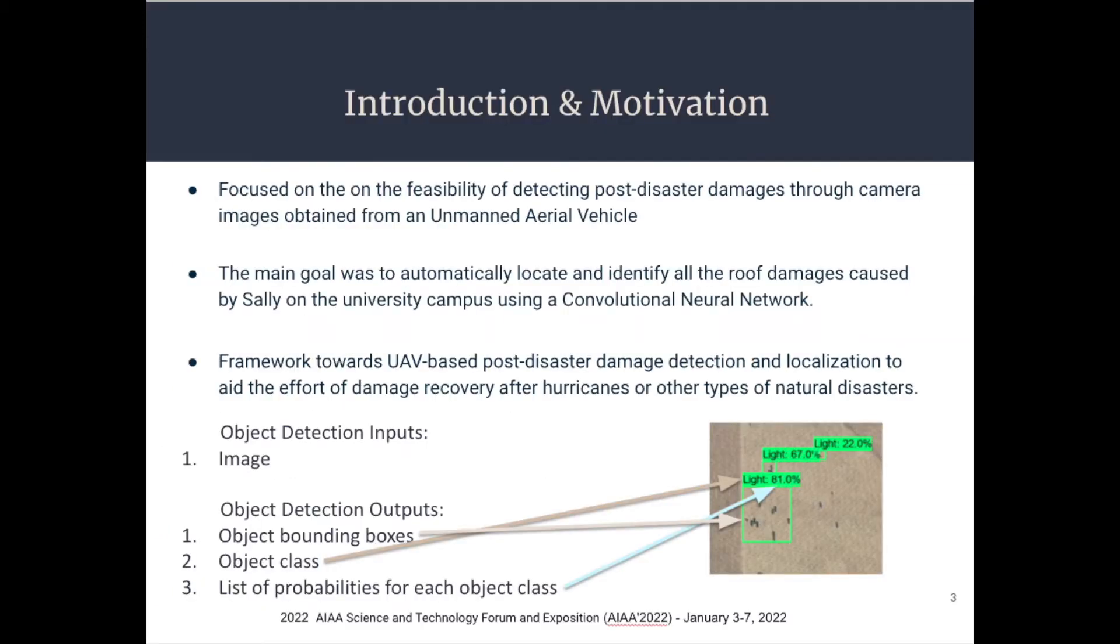For the introduction and motivation, this study is mainly focused on the feasibility of detecting post-disaster damages through camera images obtained from an unmanned aerial vehicle. Aerial footage from the University of West Florida campus after being hit by Hurricane Sally last year is used in our study. The main goal was to automatically locate and identify all the roof damages caused by Sally on the University campus using a convolutional neural network. We aim to propose a framework towards UAV-based post-disaster damage detection and localization to aid the effort of damage recovery after hurricanes and other types of disasters.